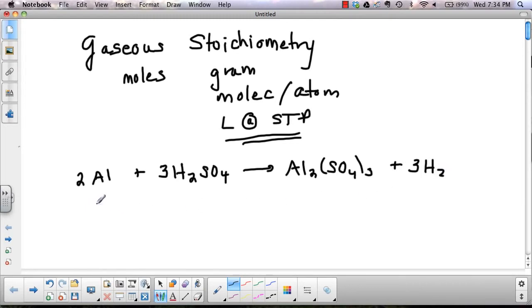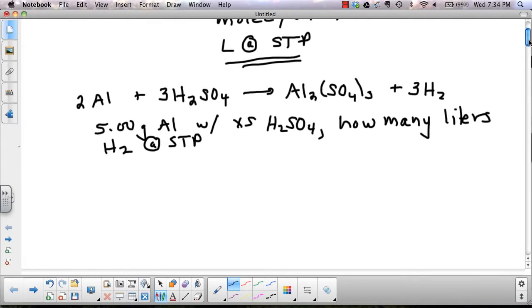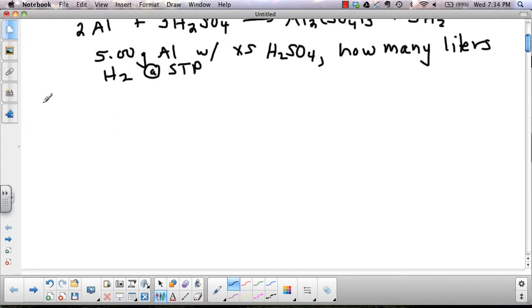And we're going to say, what happens if 5 grams of aluminum reacts with an excess of H2SO4? We want to know how many liters of H2 gas is formed at STP? Since we're at STP, we're going to be able to go ahead and use 22.4. So we'll start with, make sure we can see our coefficients up here.